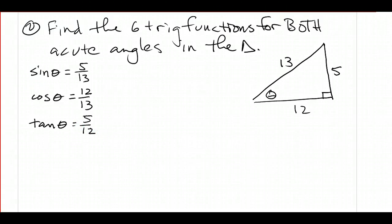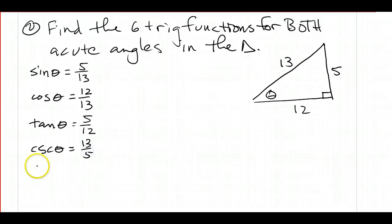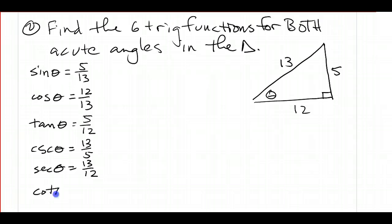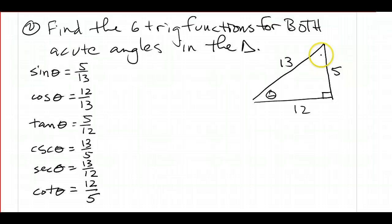Then I've got my three reciprocal functions. The reciprocal of sine is cosecant, so cosecant of theta is going to be 13 over 5. Secant of theta — reciprocal of cosine — is 13 over 12. And then the cotangent of theta — reciprocal of the tangent — is 12 over 5.